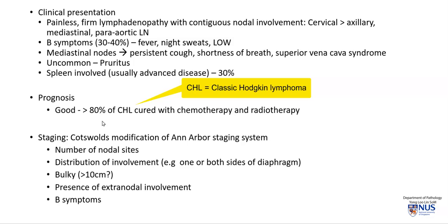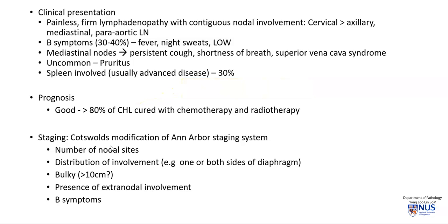The prognosis is generally good, with a high proportion of cases being cured by chemotherapy as well as radiotherapy. Staging is done using the Cotswolds modification of the Ann Arbor staging system. This has been around for many decades, and it depends on the number of nodal sites, the distribution of involvement, whether it is on one side or both sides of the diaphragm, how large the nodal disease is, the presence of extra-nodal involvement such as liver involvement, and also the presence of B symptoms. If present, the prognosis is worse.